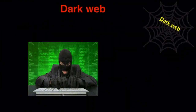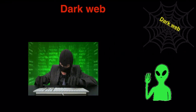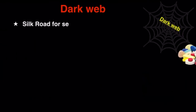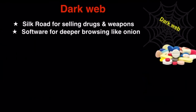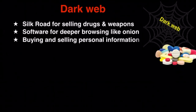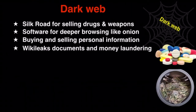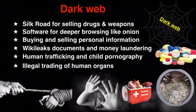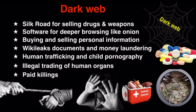On the dark net, there are websites related to black markets and illegal activities, such as Silk Road for selling drugs and weapons, software for deeper browsing like Onion Browser, buying and selling personal information, WikiLeaks documents, money laundering, human trafficking, child pornography, illegal trading of human organs, paid killings, and so on. These are some common examples, but everything imaginable is happening on the dark net. You can even watch live torture and black magic if you pay.